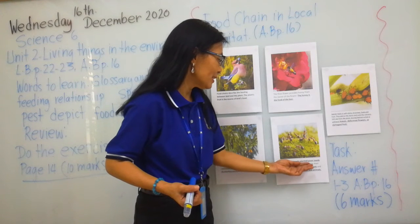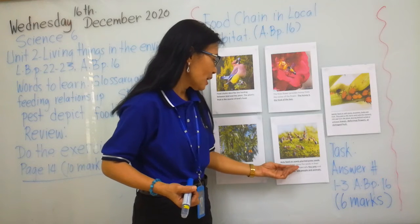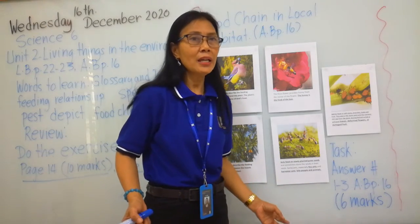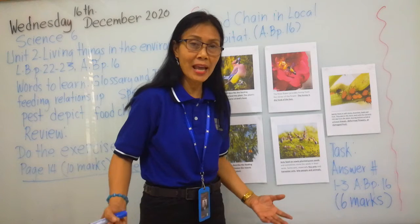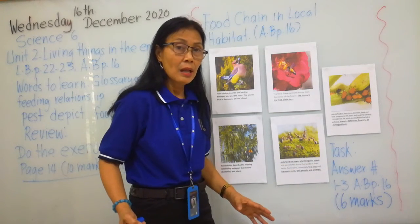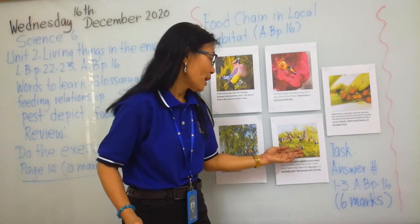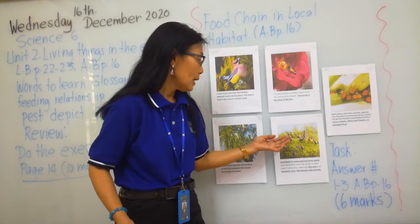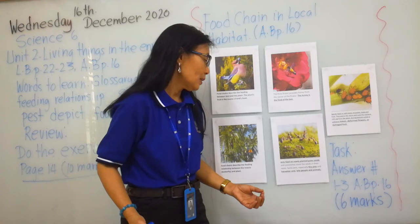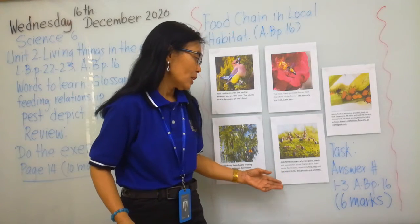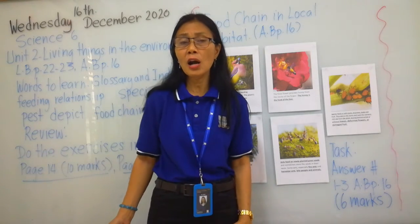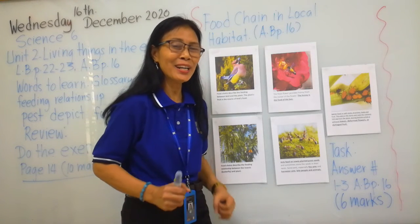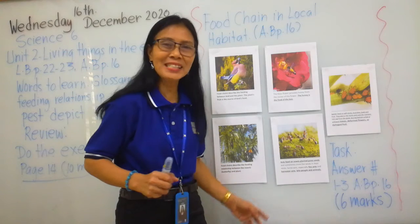Ants feed on the newly planted grass seeds and sometimes store the seeds in their nests. So there are times when you are walking, you can observe some ants on the grass, because the grass has newly grown seeds that the ants need in order to feed themselves. That is why sometimes the ants are also harmful — because the ants bite us, and it hurts when we are bitten by ants.